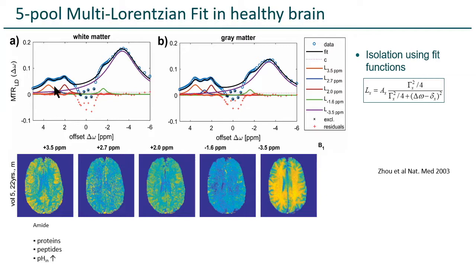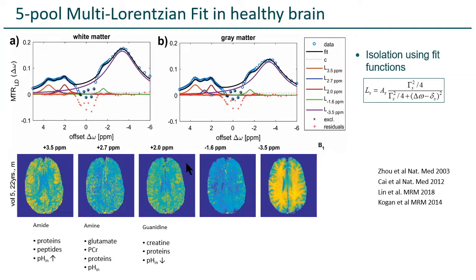The 3.5 ppm peak originates from proteins and peptides, and it has a positive correlation with pH. At 2.7 ppm, glutamate was also published, as well as phosphocreatine — but glutamate you shouldn't see at these low powers. However, there are also proteins, and it's related to intracellular pH. At 2 ppm, there's a big contribution of creatine, but also proteins resonate there, and they have an opposite pH dependency — which is nice, because then you can do some pH ratiometric methods.